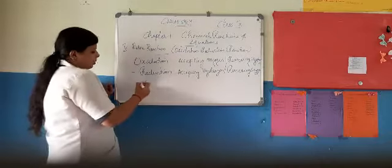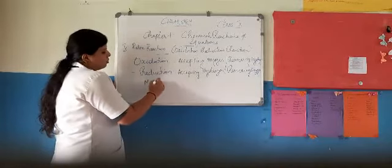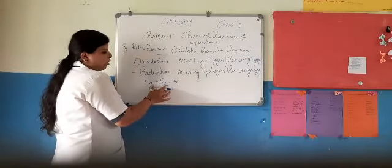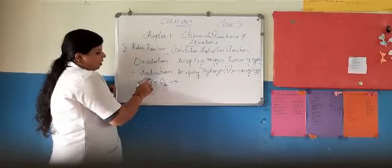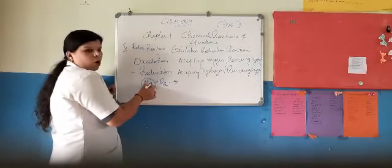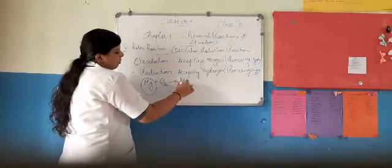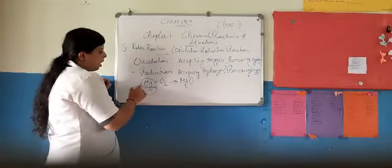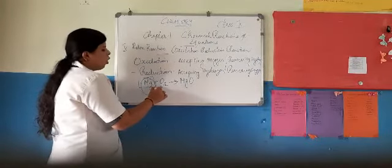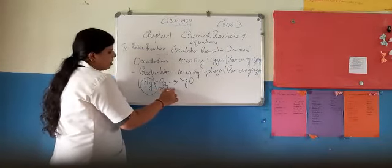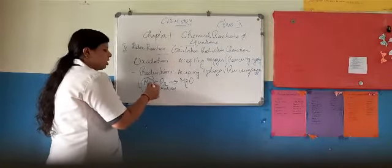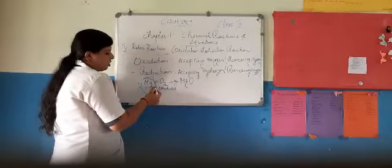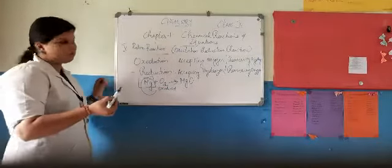As an example, we can see the reaction Mg + O₂ — reaction between magnesium and oxygen. What is happening to magnesium? It is accepting oxygen, resulting in the production of magnesium oxide. So, magnesium is said to be oxidized — it receives oxygen and the resultant product is formed.